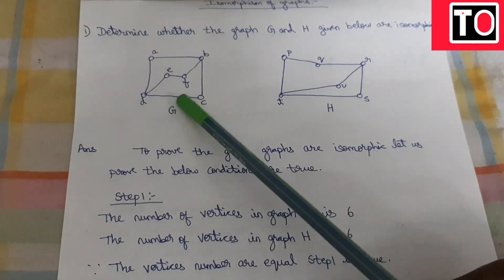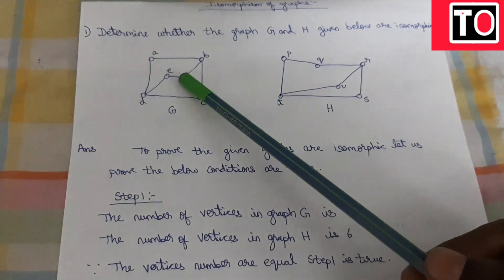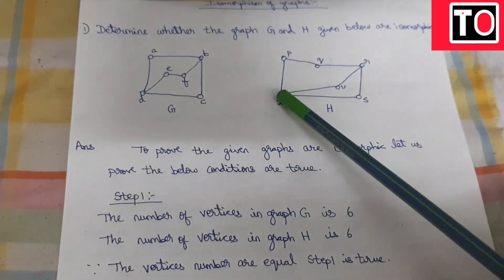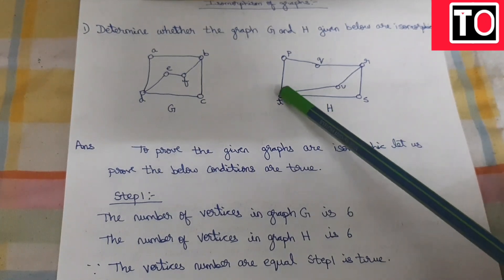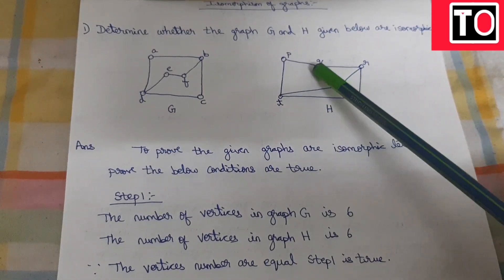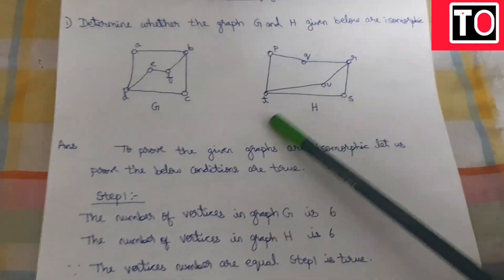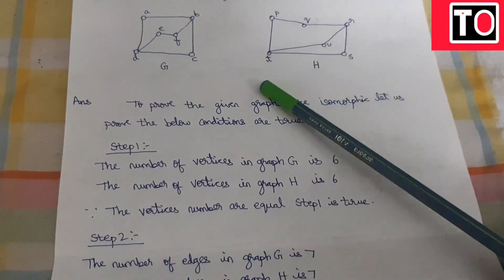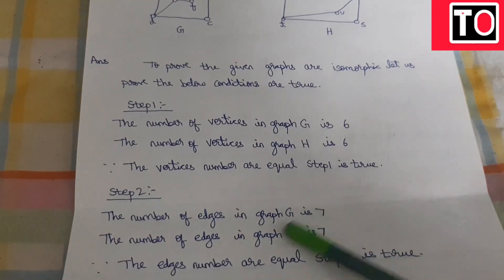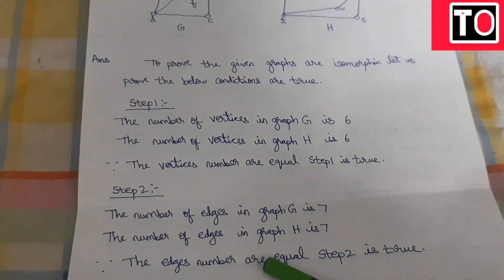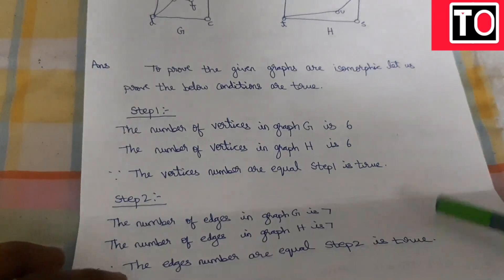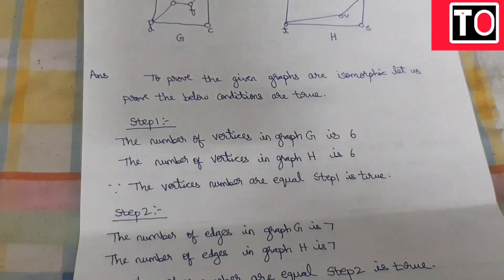Step 2: the number of edges. The number of edges in graph G and graph H are compared. Since the edge counts are equal, Step 2 is true.